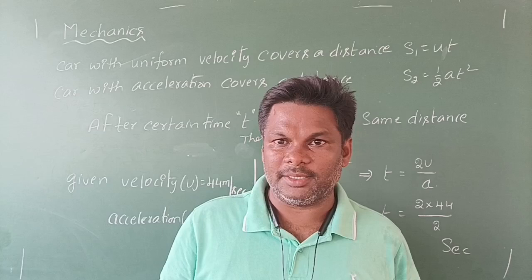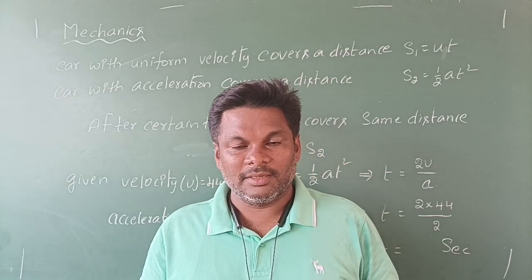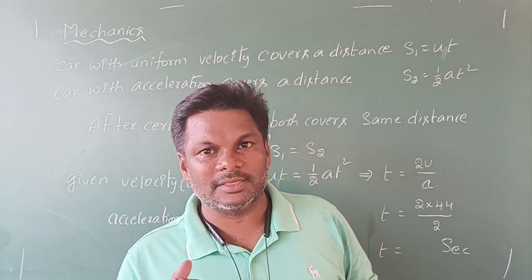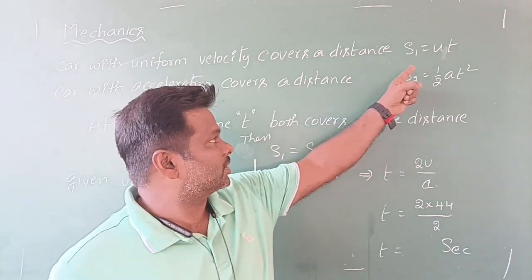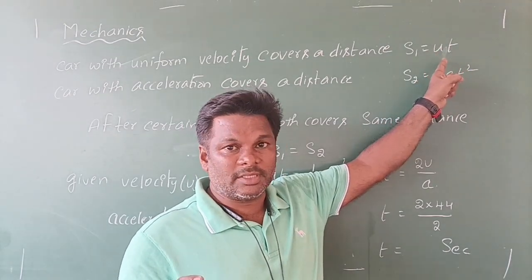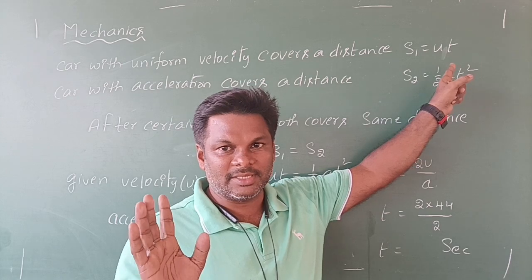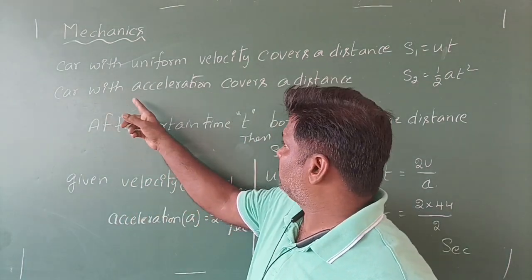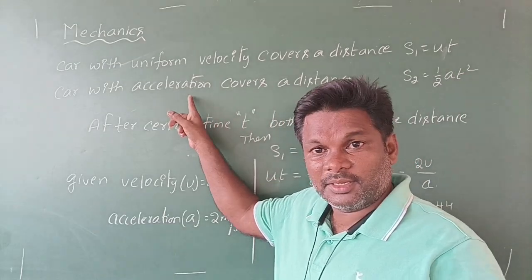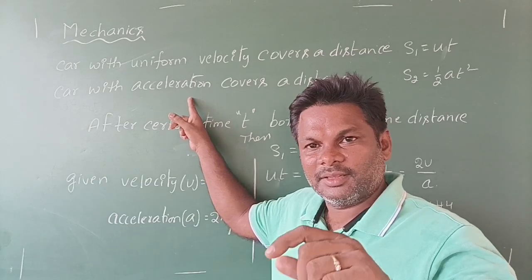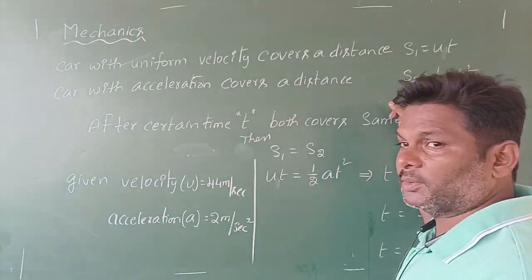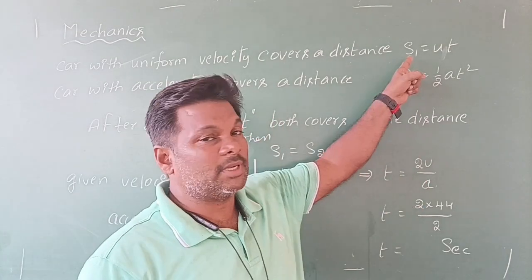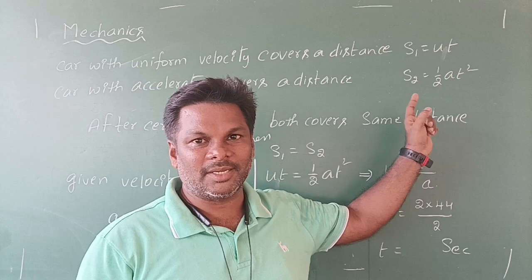In our first problem, a car is given. In the first case it is in uniform motion, and the distance covered by the car is s = velocity × time — this velocity is constant throughout its journey. The same car then covers a distance with acceleration, i.e., with increasing velocity, and the formula for distance is s = ½at². You need to know when to use each formula.